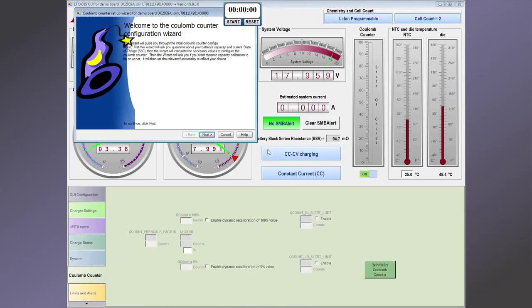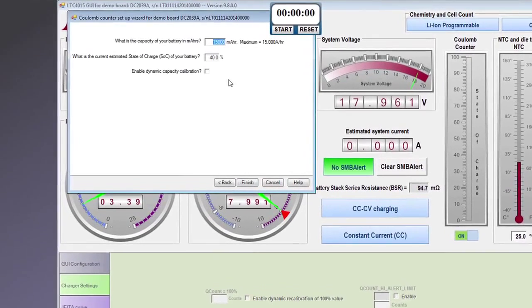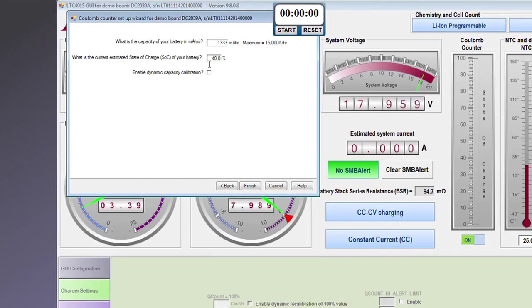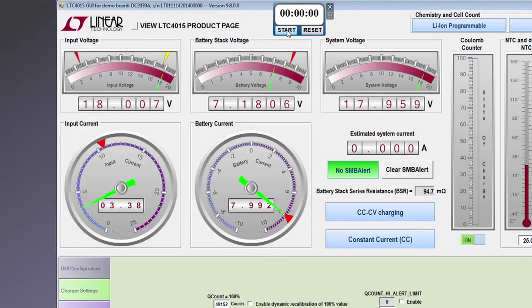Let's start by launching the Coulomb counter configuration wizard. By choosing a battery capacity of 1,333 milliamp hours, the Coulomb counter increments 10% every minute due to the 8 amp charge current. We'll let that run while we examine some other features.